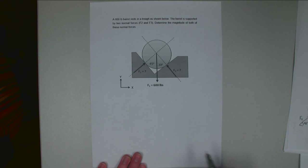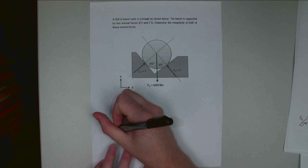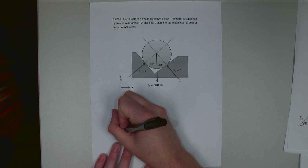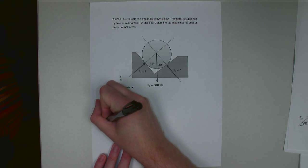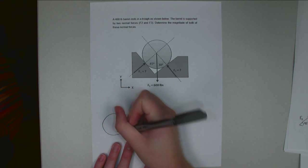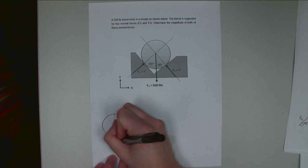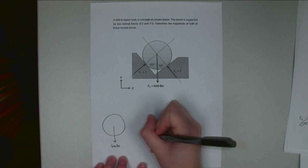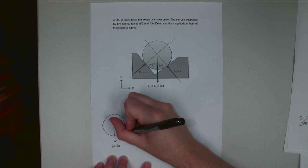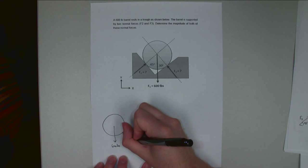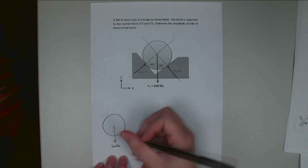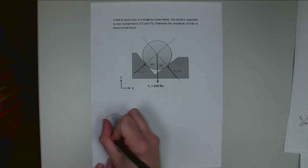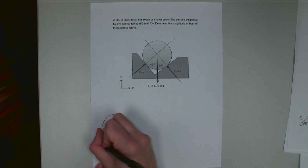Alright, step one in our equilibrium analysis, we need to draw a free-body diagram. So for our barrel, I'm just going to draw the barrel in there. We have our 600-pound force, and we have F3 over here and F2 over here.